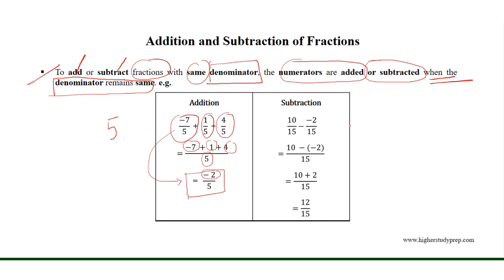Similarly, if we want to subtract the fraction minus 2 over 15 from the fraction 10 over 15, we subtract minus 2 from 10, which results in 10 plus 2 equals 12, while the denominator 15 remains the same, because both fractions have the same denominator. Thus, the subtraction of the fractions results in 12 over 15.